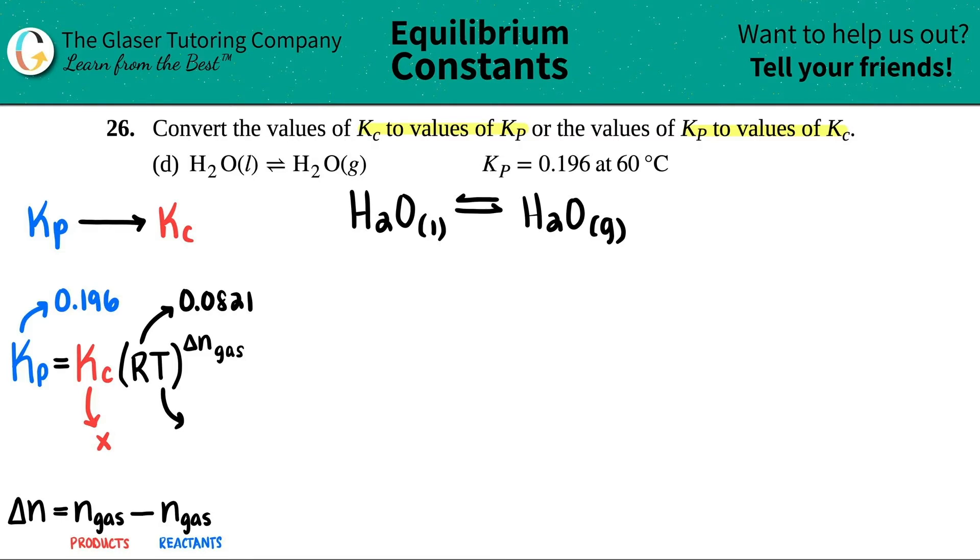T stands for temp, but it's got to be in Kelvin. They give us 60 degrees Celsius. So I have to convert 60 degrees Celsius into Kelvin. How do we do that? We know that, right? All you got to do is just plus 273. So 60 plus 273 is 333. So that's this number right here.